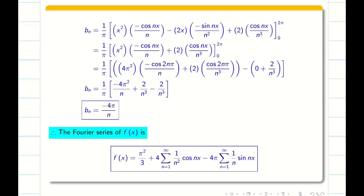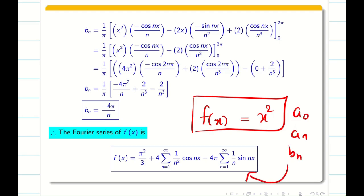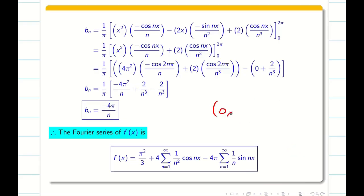Now substitute my a0, an, bn in the formula. We get the final Fourier series. So remember students, if the given function f of x does not satisfy the property, then no other go. We have to solve like a0, an, bn and we have to substitute that to get the final answer Fourier series of f of x.